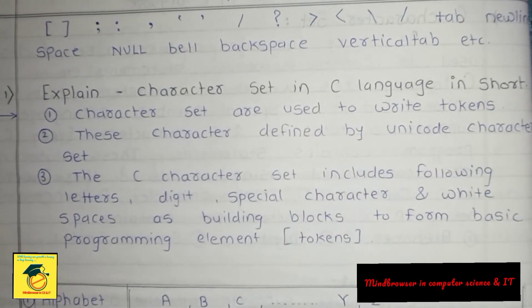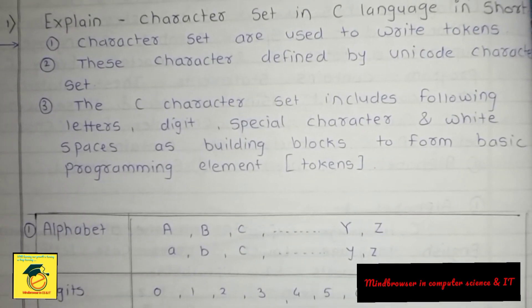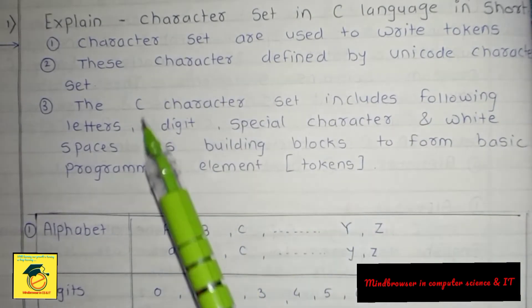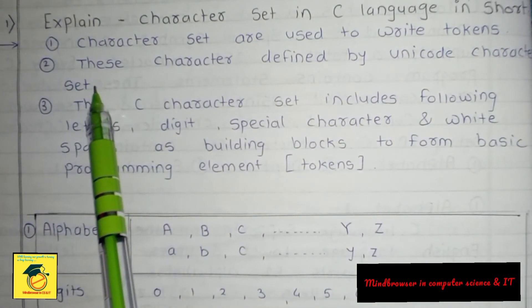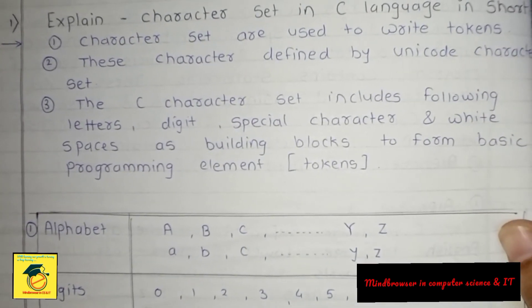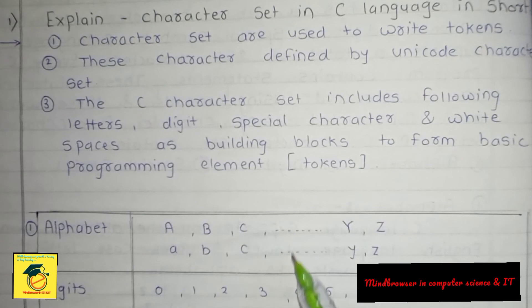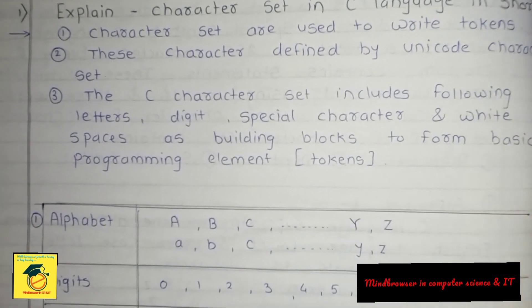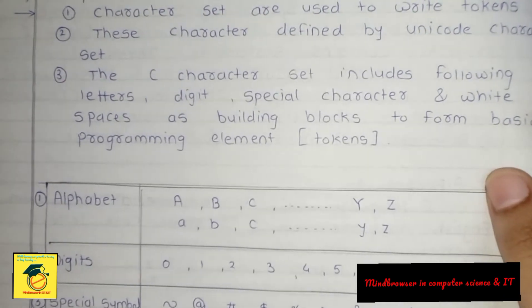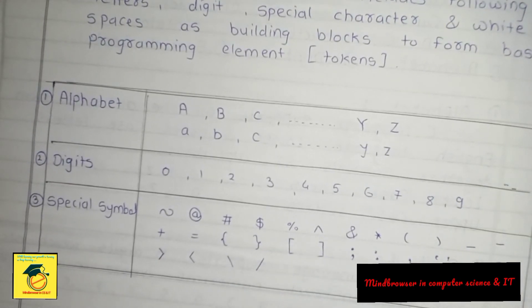These all come under special symbols. If you are asked to explain character sets in C language in short, here is how to answer: Character sets are used to write tokens. These characters are defined by Unicode character sets. The C character set includes the following: letters, digits, special symbols, white spaces, and building blocks to form basic programming elements. Write a table showing what comes under alphabets, digits, and special symbols — this will get you full marks.